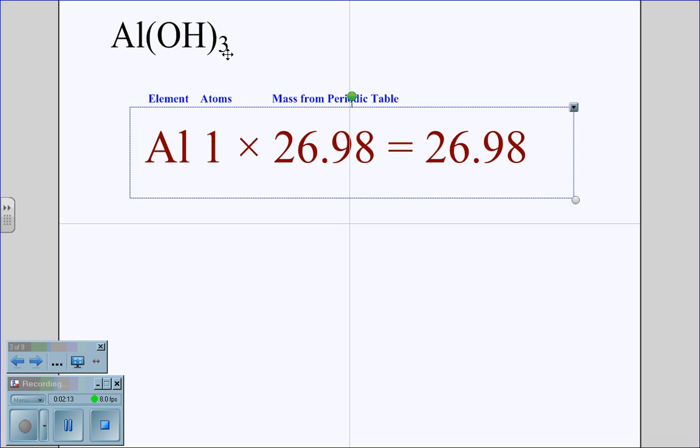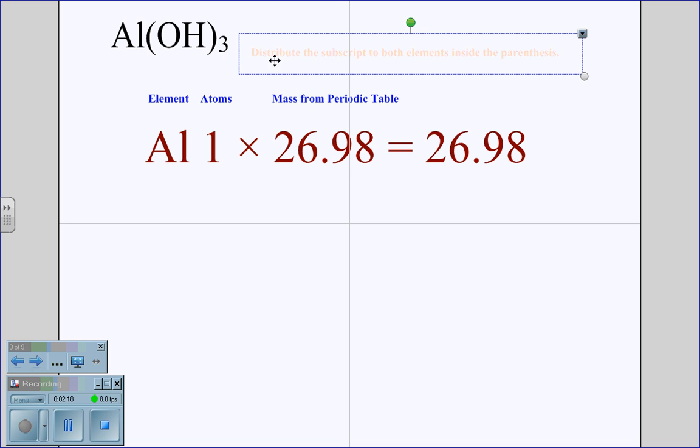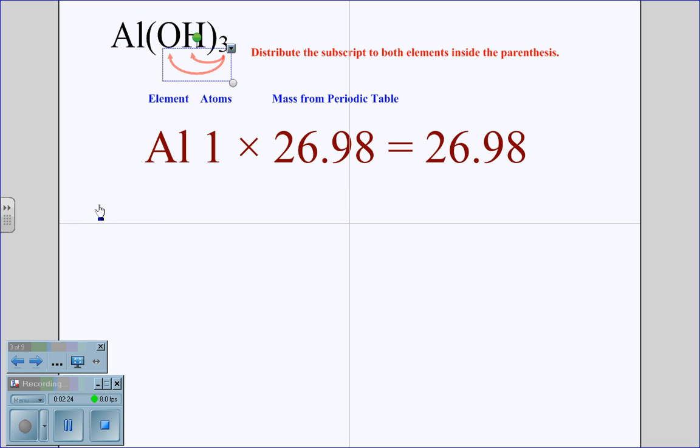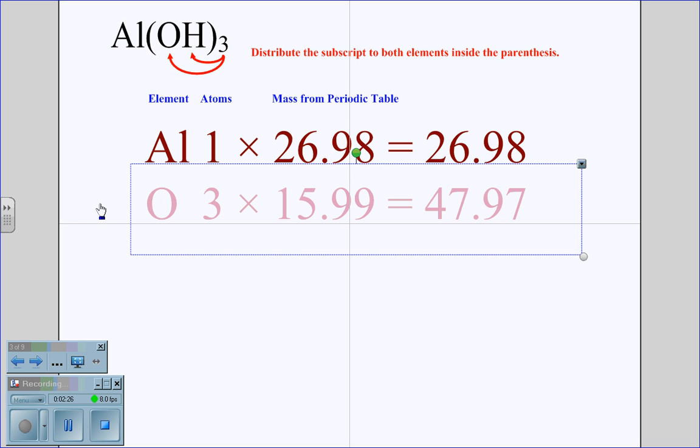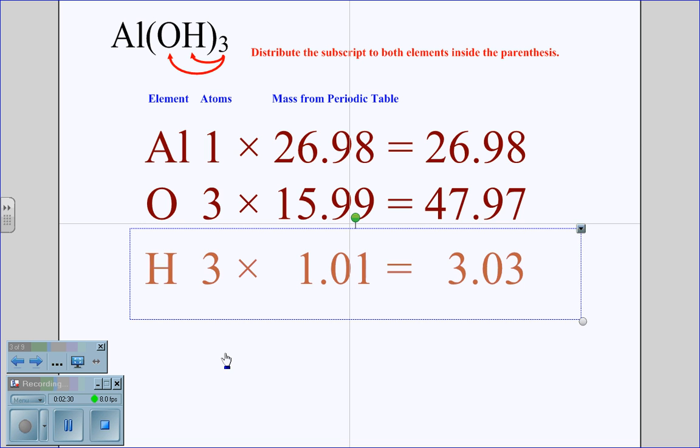And then what we're going to need to do is understand that the three outside of the parentheses, we have to distribute the subscript to both of the elements inside the parentheses. And so therefore, three gives us three oxygen atoms and three hydrogen atoms.